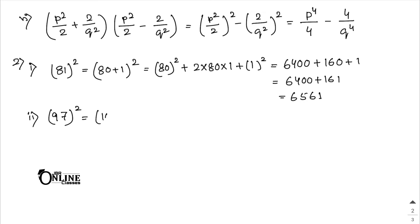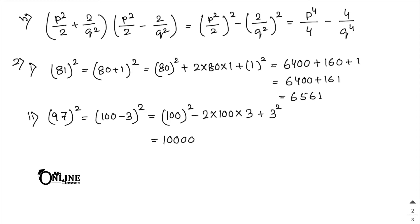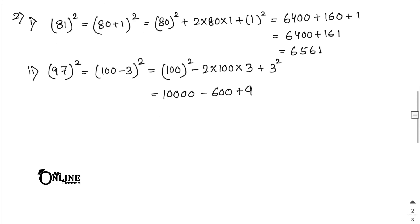97² = (100 - 3)². Apply (a - b)² = a² - 2ab + b² = 10000 - 600 + 9 = 9409.